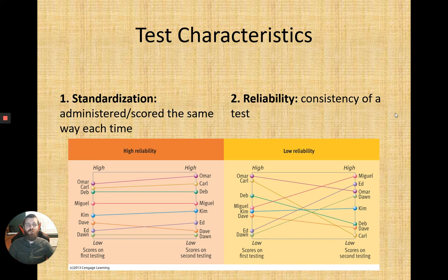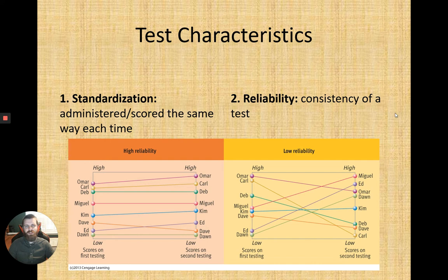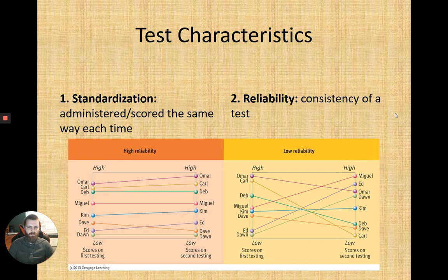A test with low reliability shows scores fluctuating widely between attempts — getting a high score today and a terrible score tomorrow, or a bad score then a very high score. On the high reliability side, scores stay approximately the same across testing sessions — perhaps slightly increasing or decreasing, but ultimately consistent. That consistency is what makes a test reliable.